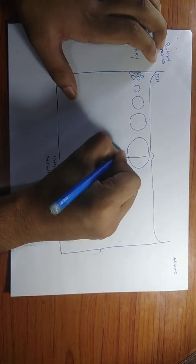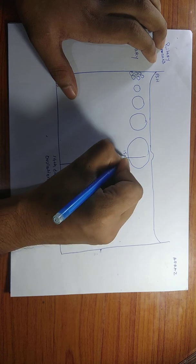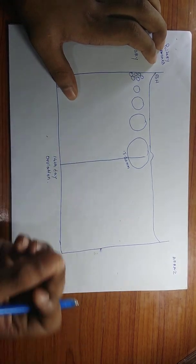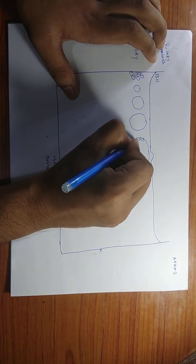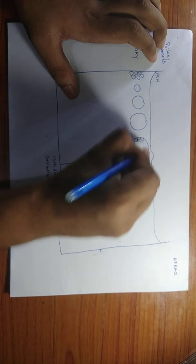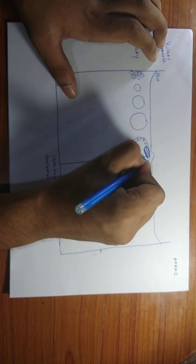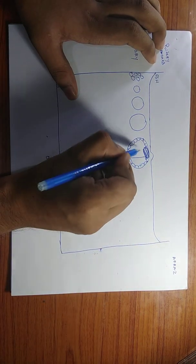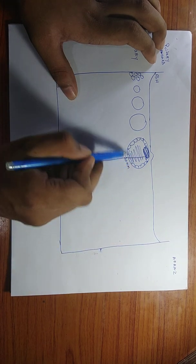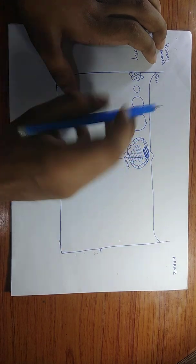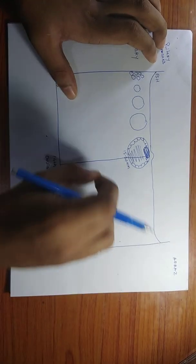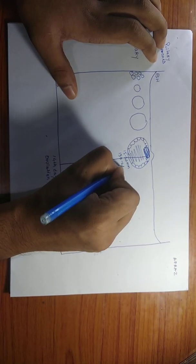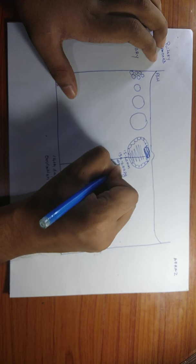The dominant follicle grows to a size of 15 to 20 mm and produces estrogen. Inside the follicle you have the oocyte surrounded by granulosa cells, and inside is fluid. This is the dominant follicle — size 15 to 20 mm — and it produces around 150 to 200 picograms of estrogen.